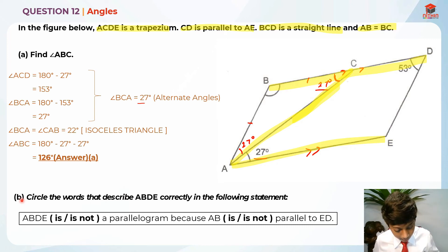So, let's move on to part B. Now let's read part B. Circle the words that describe ABDE correctly in the following statement. So there's actually no key information over here. So, this is the statement. ABDE is or is not a parallelogram because AB is or is not parallel to ED.